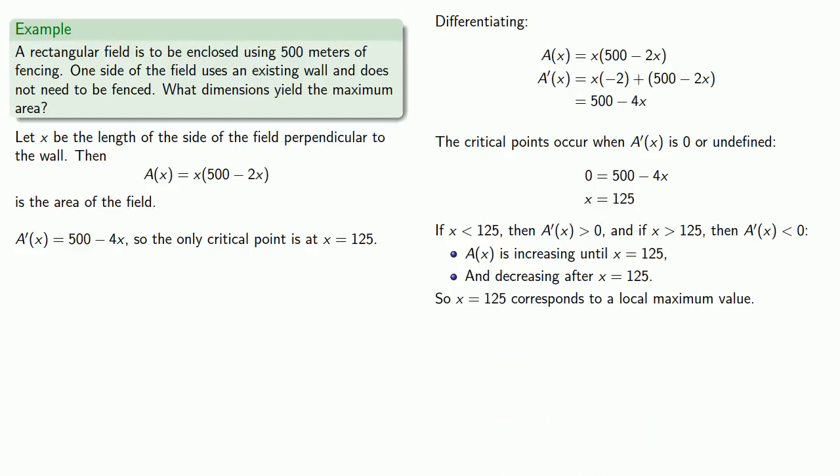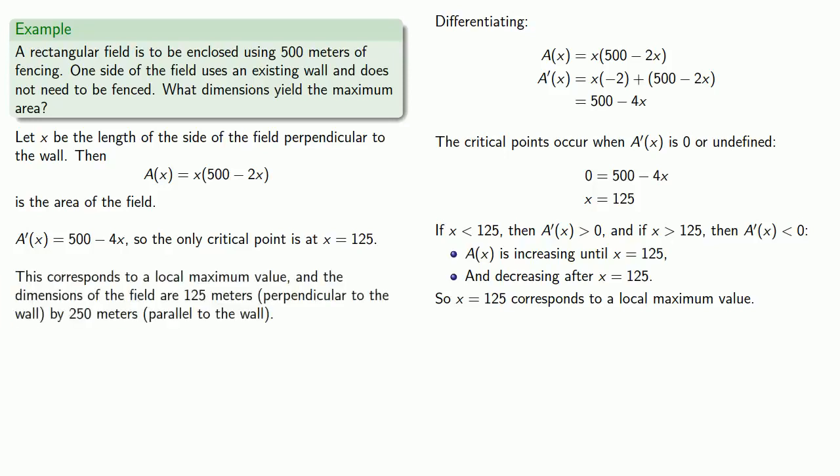And finally, we want to make sure we actually answer the question that was asked. What are the dimensions? And here we find that x equals 125. x is the length of the side of the field perpendicular to the wall. So that means the other side is going to be 250 meters in length.